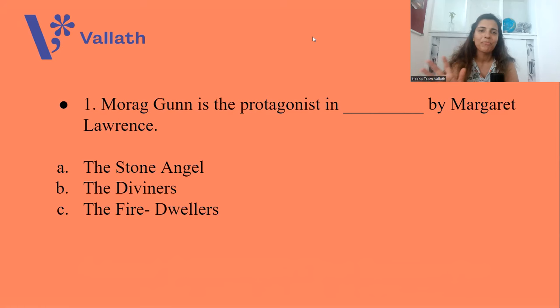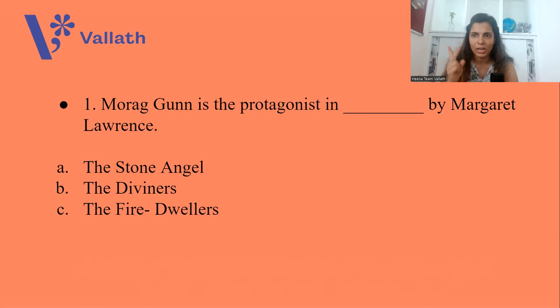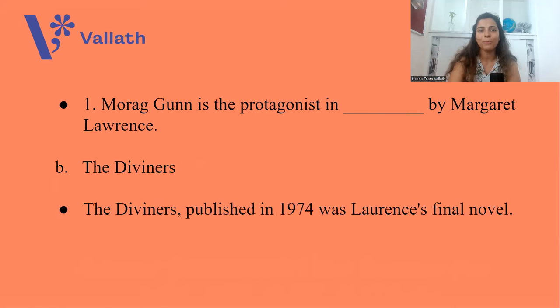Question number one: Morag Gunn is the protagonist in a novel by Margaret Laurence. Which novel's protagonist is Morag Gunn? A. The Stone Angel, B. The Diviners, C. The Fire Dwellers. I have done the summary of The Stone Angel and The Fire Dwellers — Morag Gunn was not in them. Which means the answer is option B, The Diviners, published in 1974. This was Laurence's final novel, with protagonist Morag Gunn.